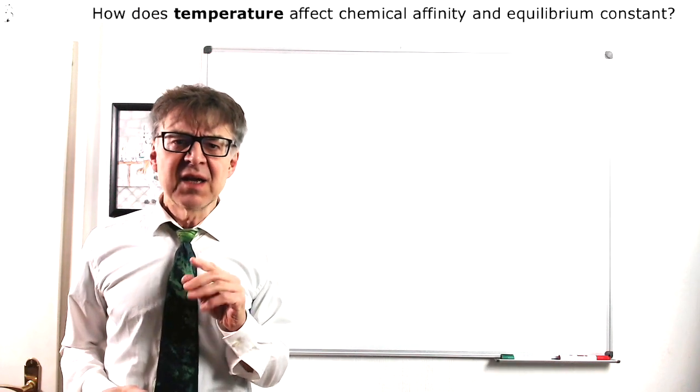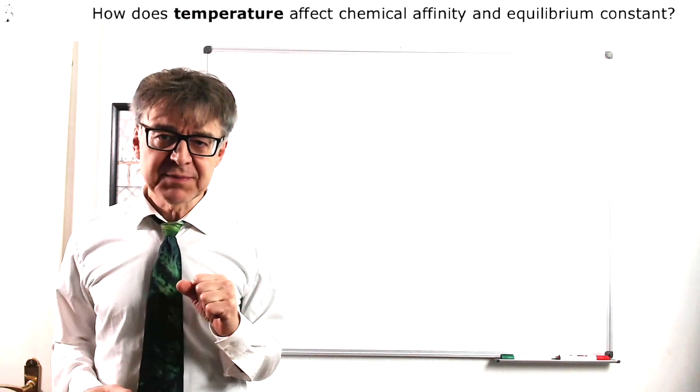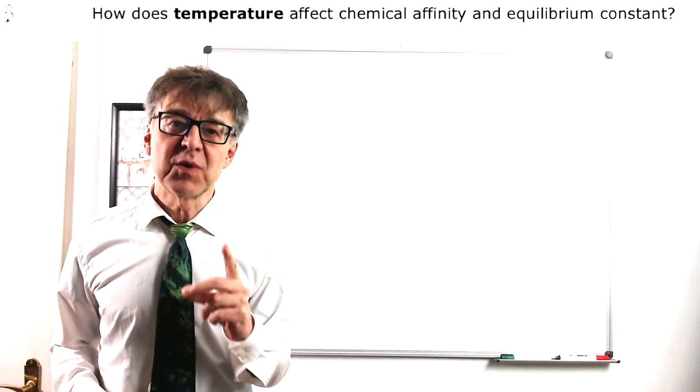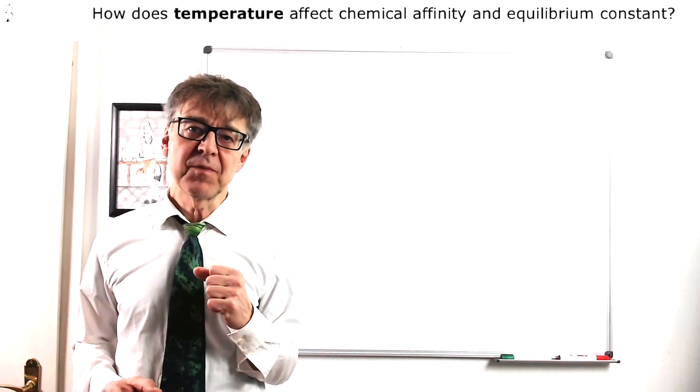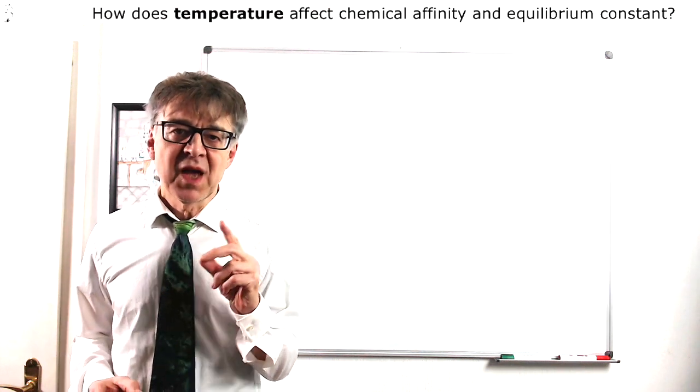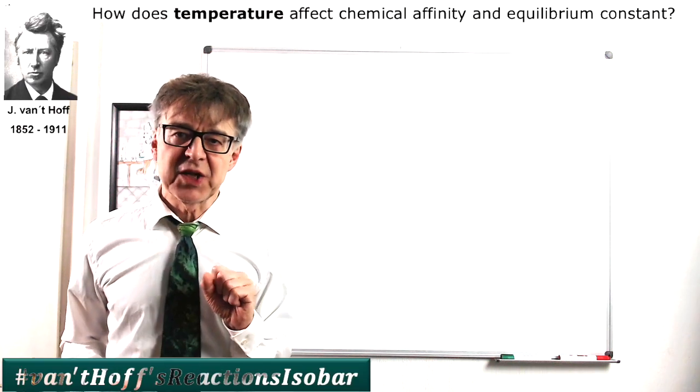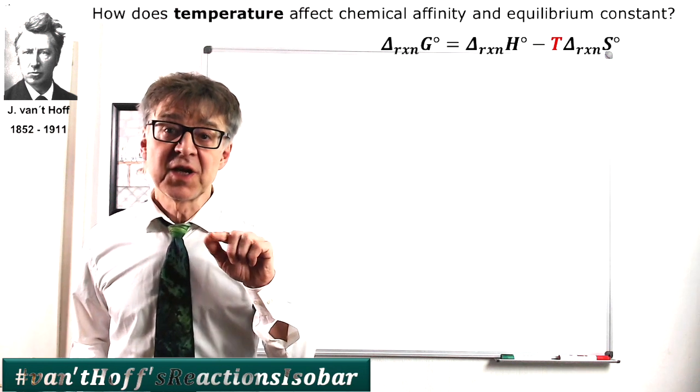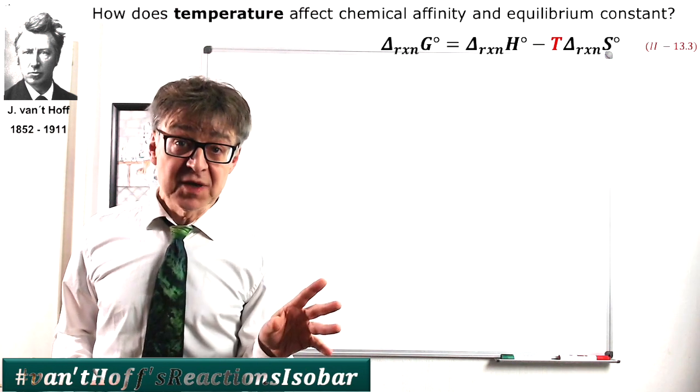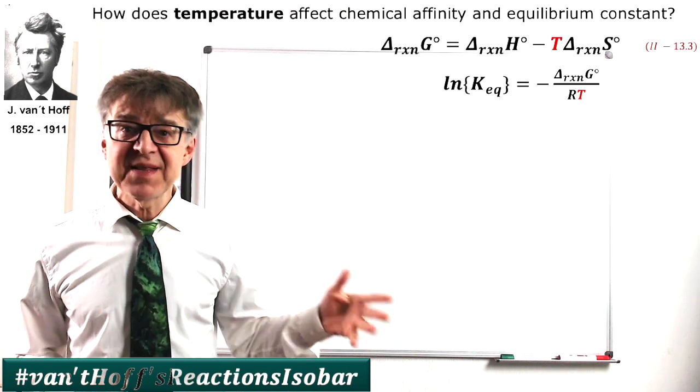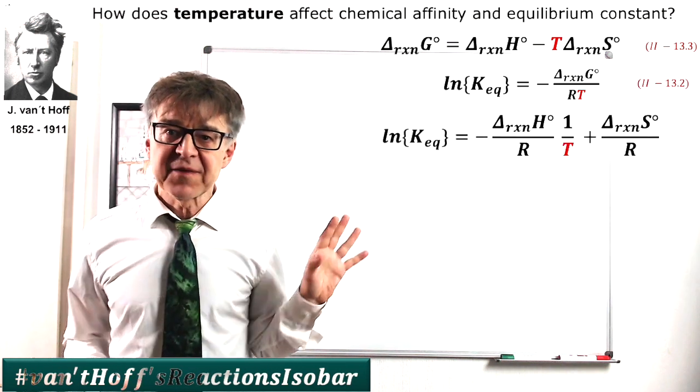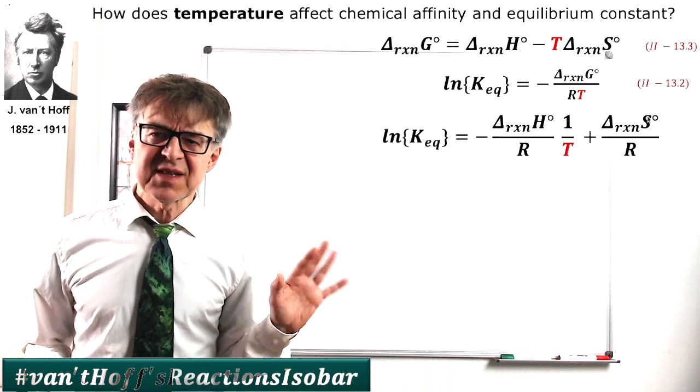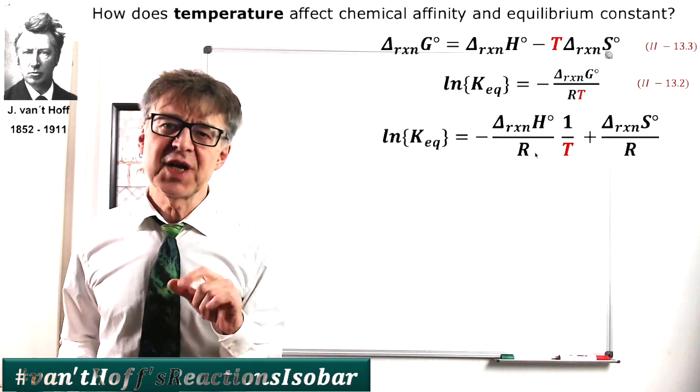As you can see, temperature has a big influence both on the Gibbs free energy, delta G0, and on the equilibrium constant K sub EQ. Let's quantify this. With a Gibbs-Helmholtz equation, we may calculate delta G, which can be converted to an equilibrium constant using this equation. If we combine these two equations, we get the following expression.